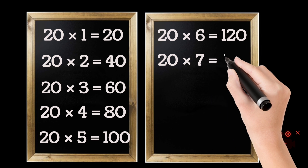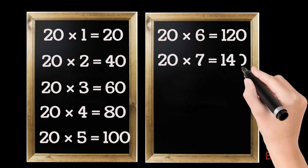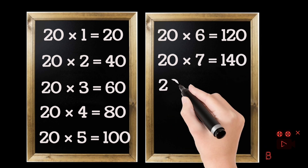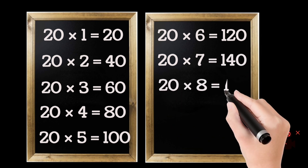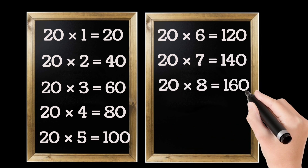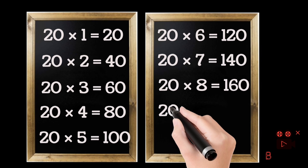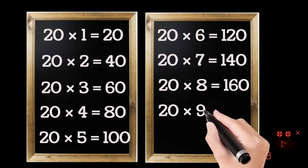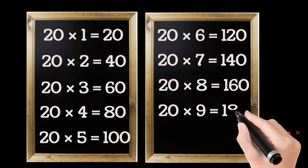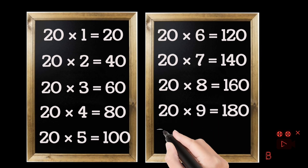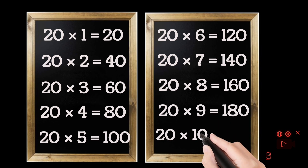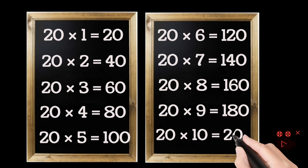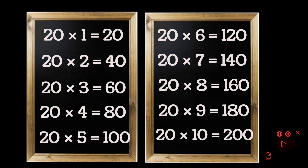20 sevens are 140. 20 eights are 160. 20 nines are 180. 20 tens are 200.